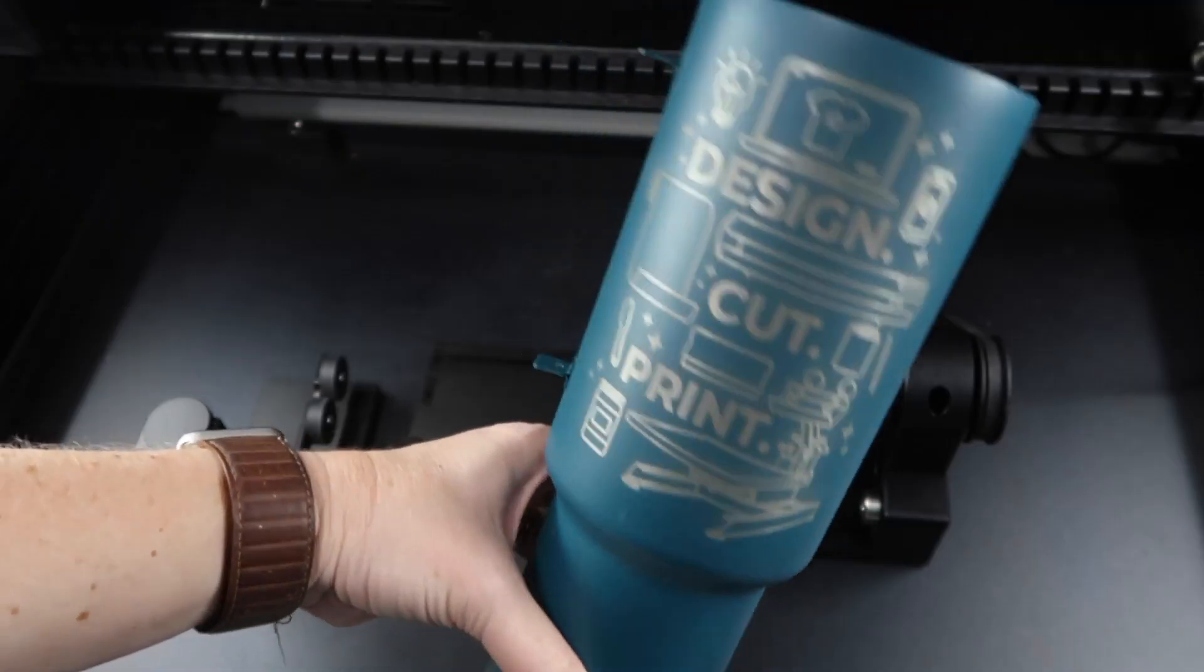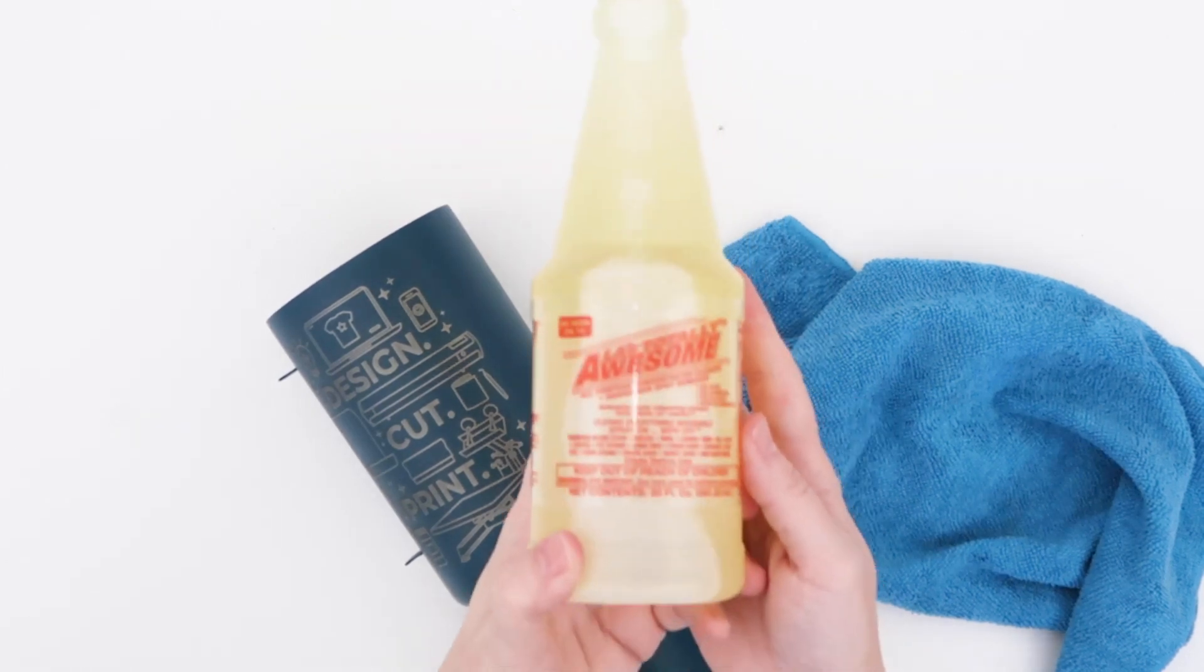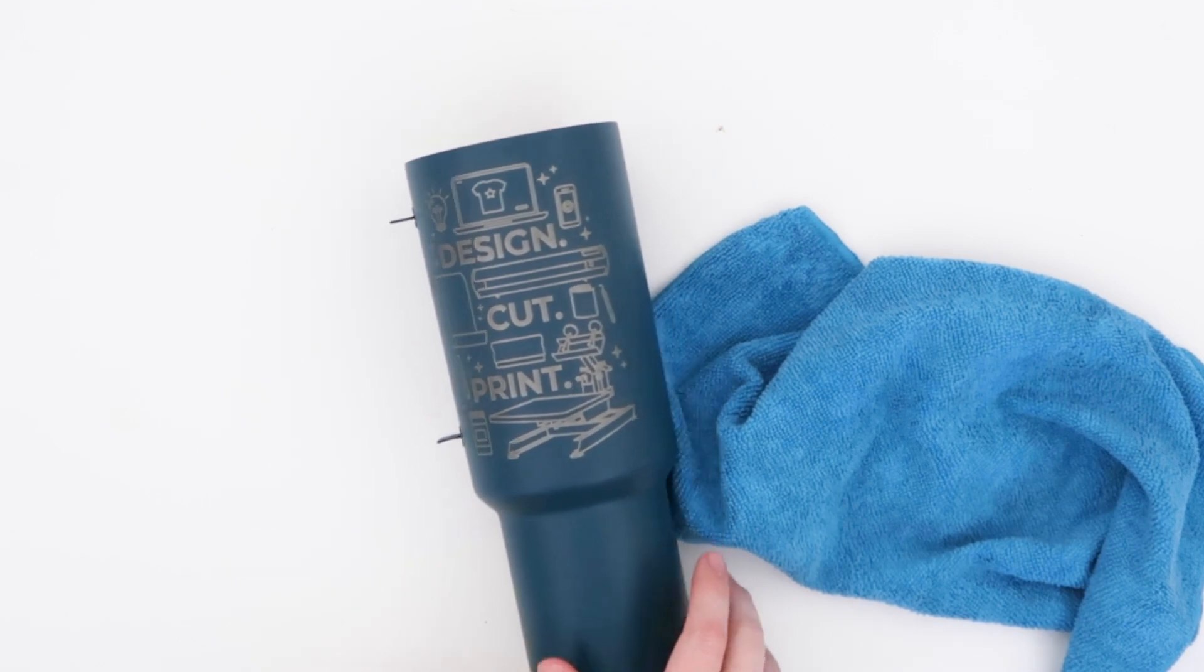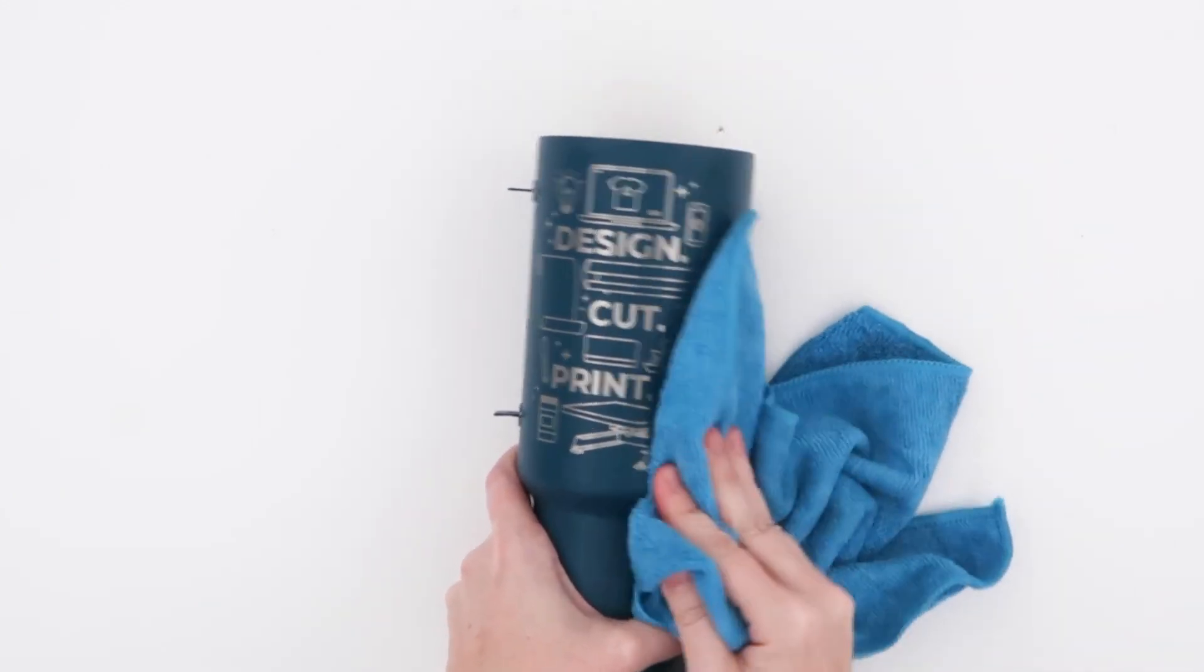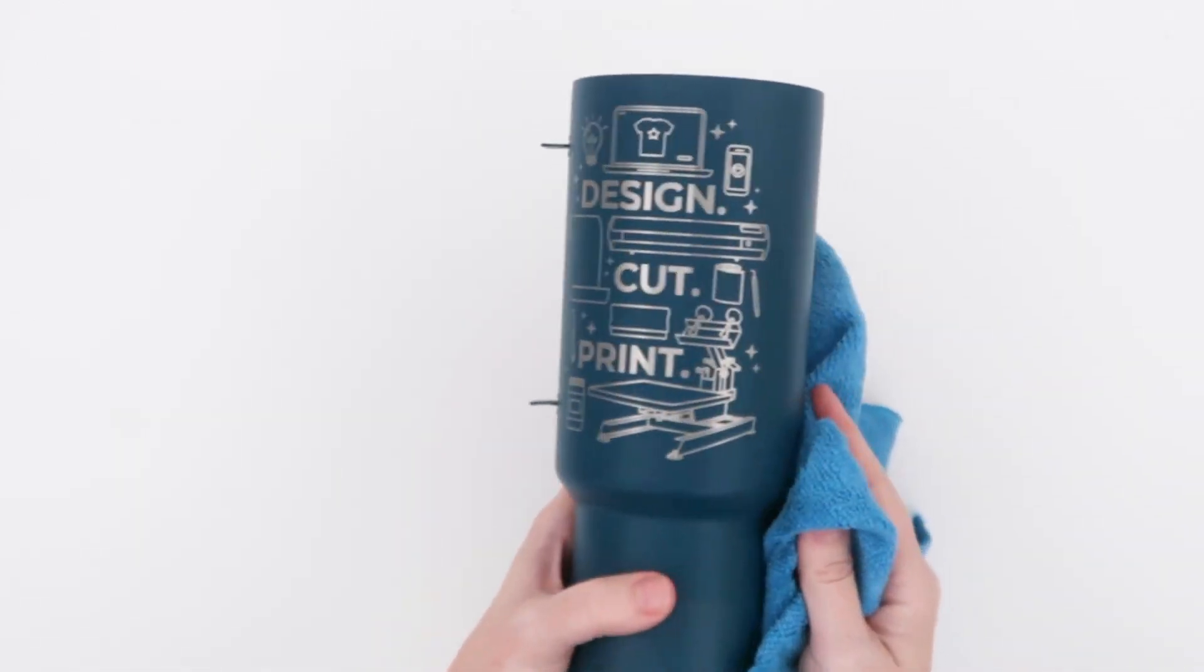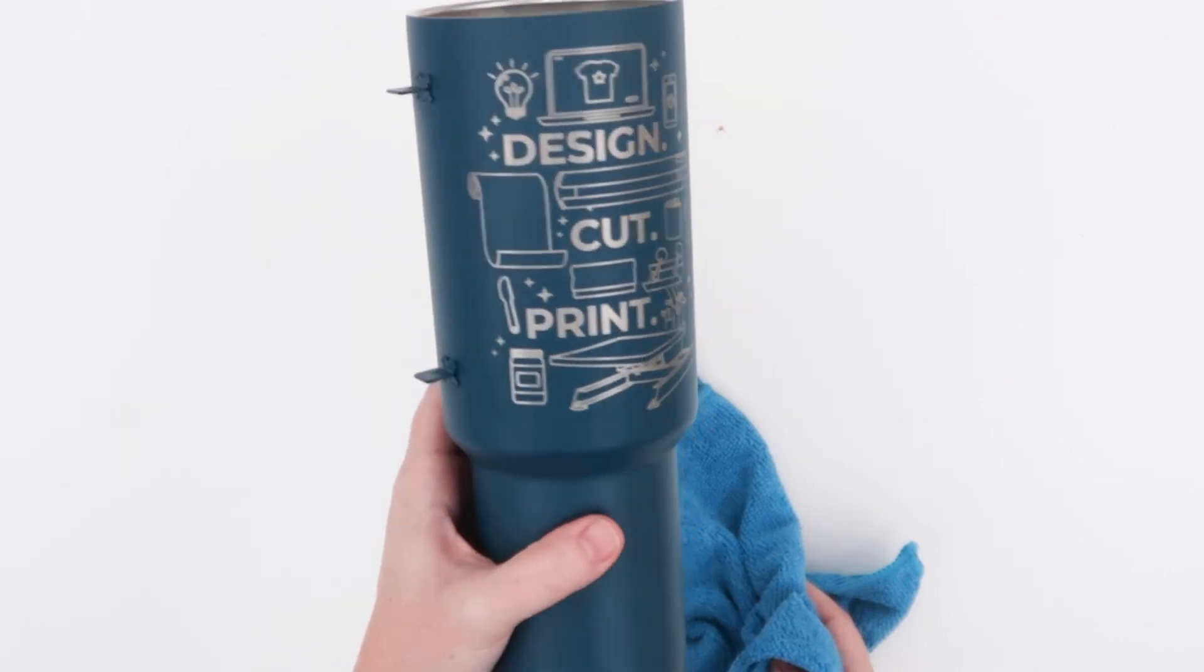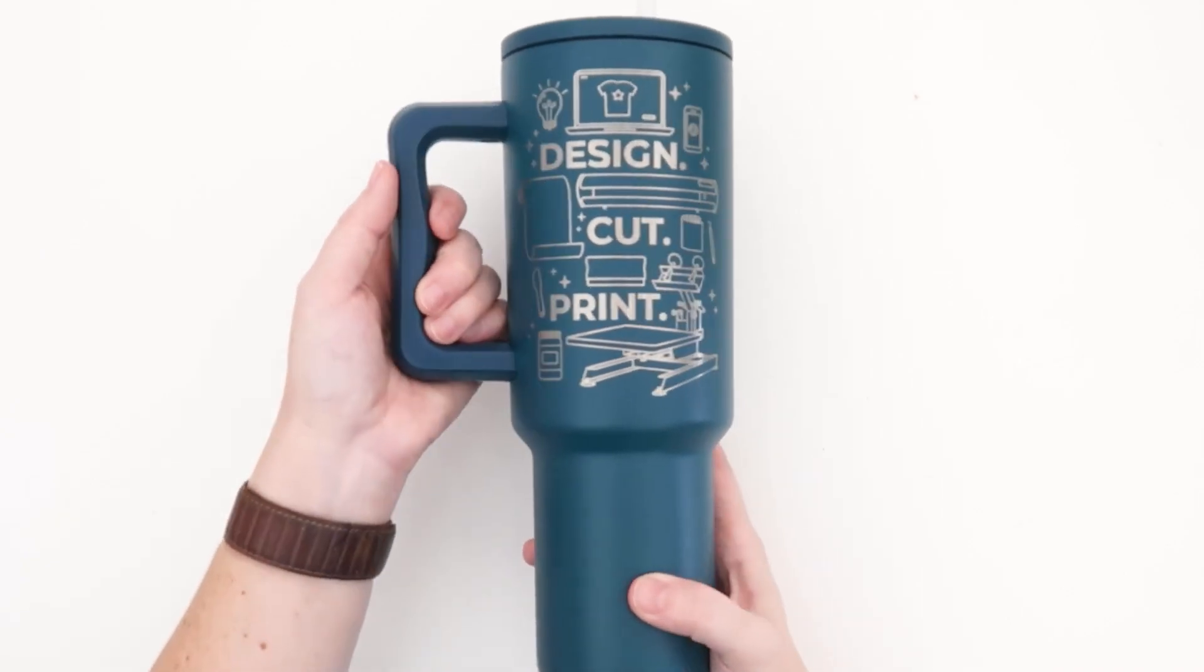When you remove the tumbler from the machine, it's going to be dirty. To clean it off, I highly recommend this LA's Totally Awesome Spray from the Dollar Tree. Spray it on and then wipe it off. And check out how it leaves the engraving nice and shiny. I've tried other ways of cleaning these tumblers and they do not work this well. Now you can put the handle back on and that's it.